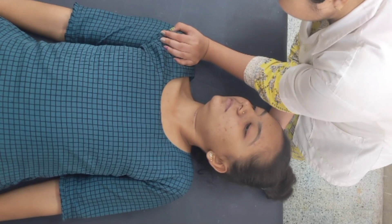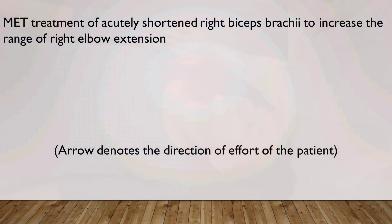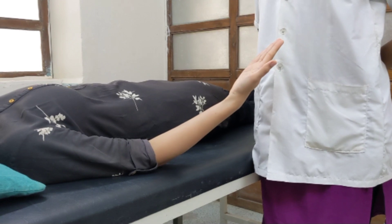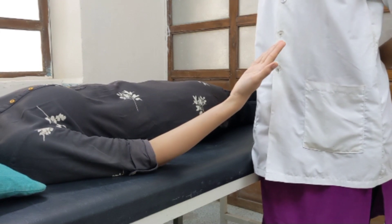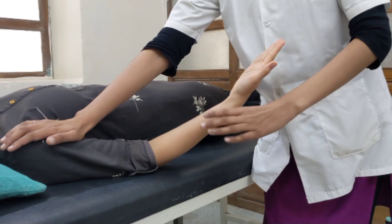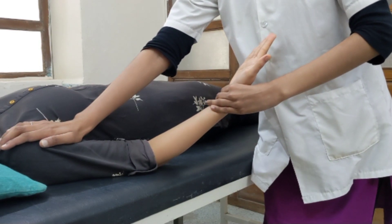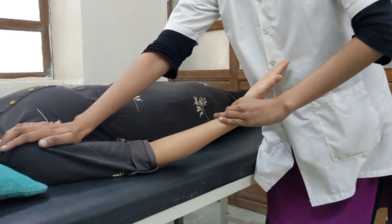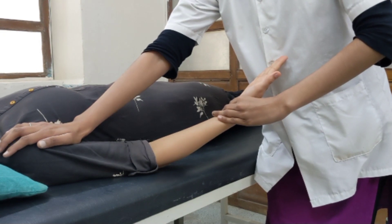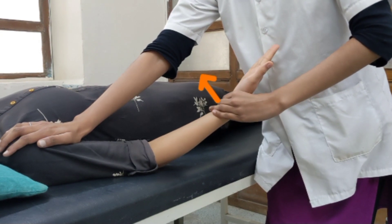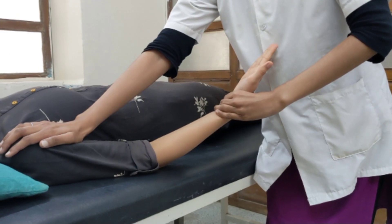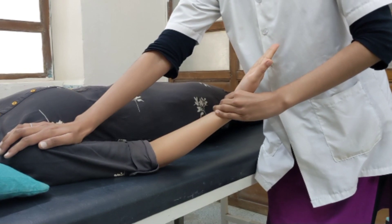MET treatment of acutely shortened right biceps brachii to increase the range of right elbow extension. Patient position: supine lying. Therapist position: standing beside the patient — one hand stabilizes the shoulder, the other hand grasps the wrist. Therapist passively moves the elbow into extension at the restriction barrier. Now the therapist asks the patient to introduce 20% effort of available strength. Hold for 5–7 seconds. Now ask the patient to completely relax.